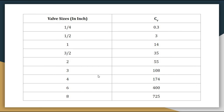The valve size is in inches on the left hand side of the table. From this table, if the valve size is one-fourth inch, then its valve coefficient Cv is 0.3, and vice versa — if the valve coefficient is 0.3, we can know that its size is one-fourth inch. Similarly, if the Cv is 108, then its size is 3 inch — a 3 inch valve has a Cv of 108. This table gives you a comparison between the valve size and its Cv coefficient.